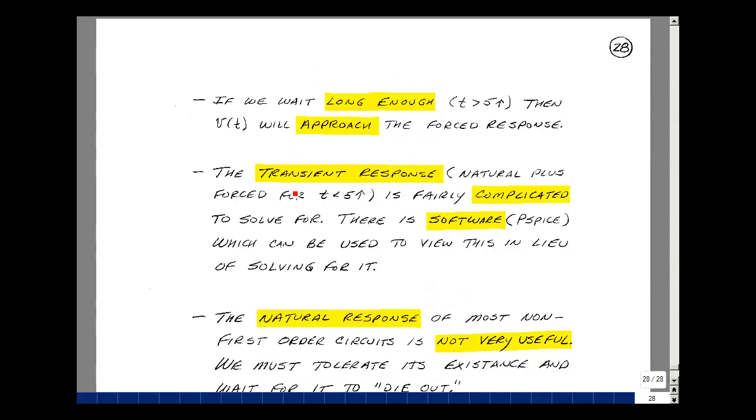As you can see on the last page, the transient response, which is the natural response plus the forced response for T less than five time constants, is a fairly complicated expression and quite difficult to solve for. There is software that will allow you to look at this result numerically, and they can determine what effect it might have on your design. But in general, the natural part of the transient response usually isn't very useful. It's something we just have to wait for it to die out.